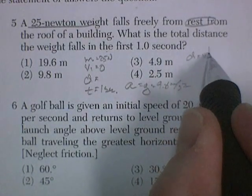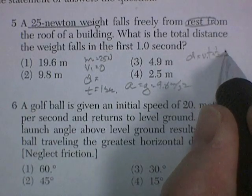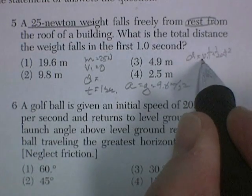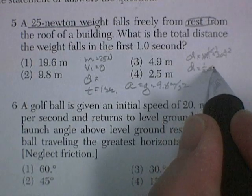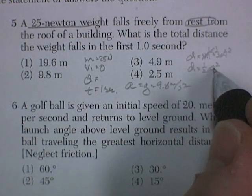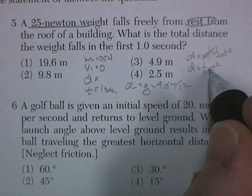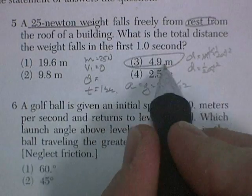Distance is equal to VIT plus 1 half AT squared. Distance equals VIT plus 1 half AT squared. VI is 0. So that element falls out. Distance equals 1 half AT squared. 1 squared is 1 times 9.8. Half of that is about 4.9 meters.